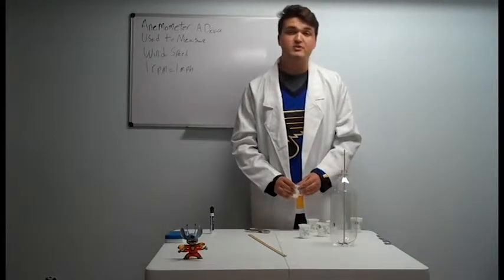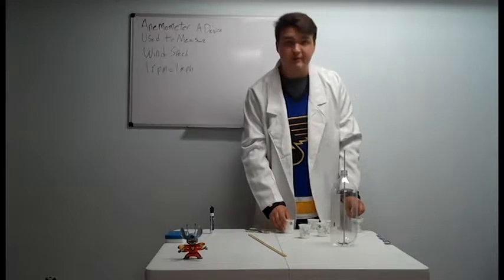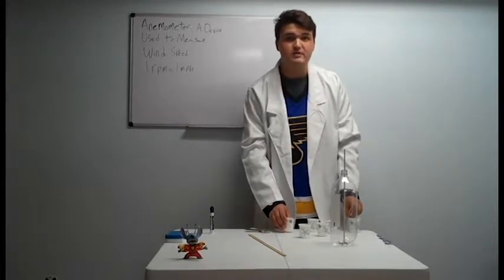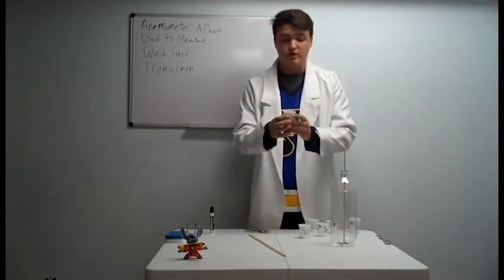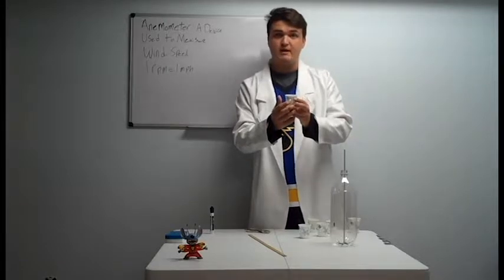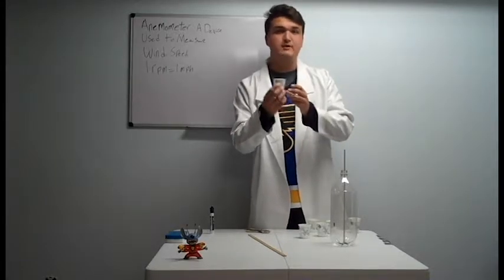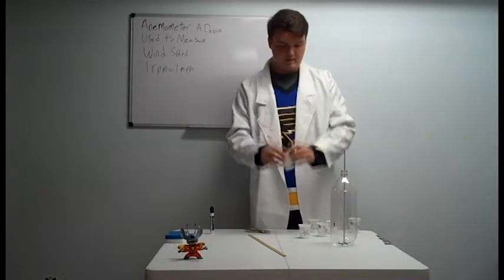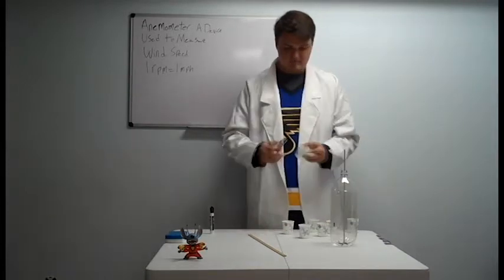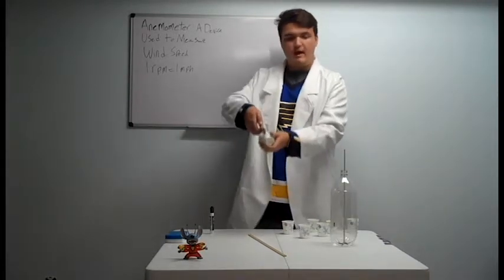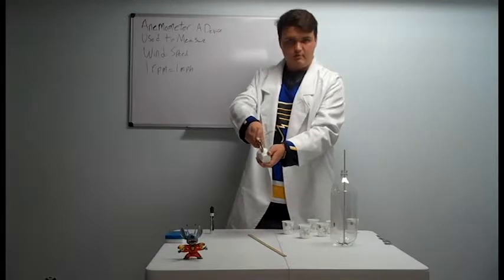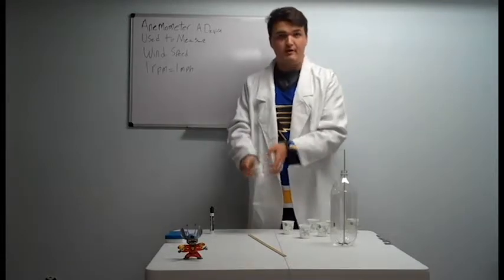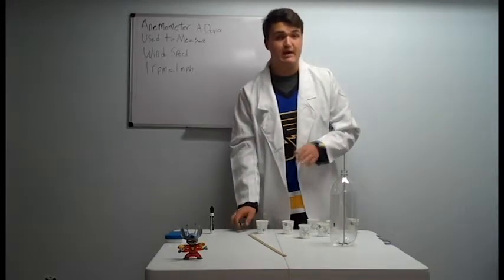Next, you're going to put a hole punch in your Dixie cups. So, in four of them, you're going to put a hole punch in the exact same spot. It's going to be right down at the bottom, or as far down as you can get with your hole punch. So, on my hole punch, I can only get about half the length, put the hole punch in, pull it out. That's where we're going to be putting the dowels later.